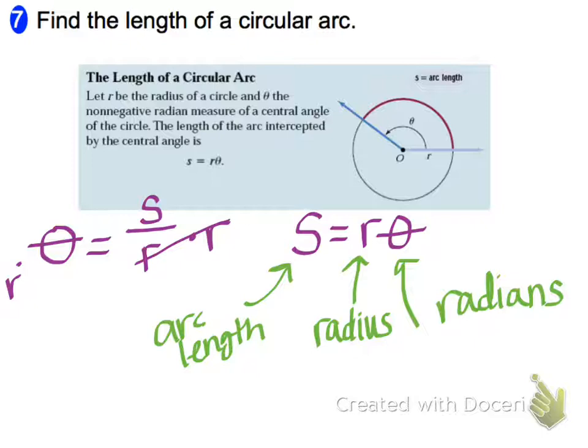And finally the S is the arc length. So to determine the length of an arc, we're going to take the radius times the angle in radians, and that would give us the length of the arc.